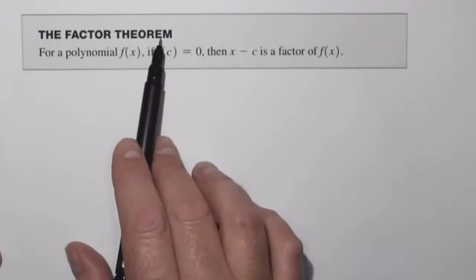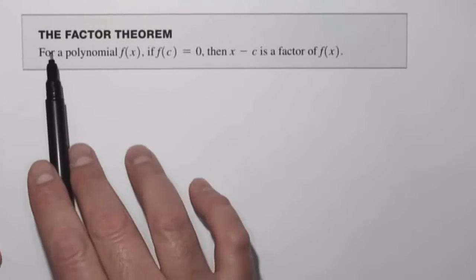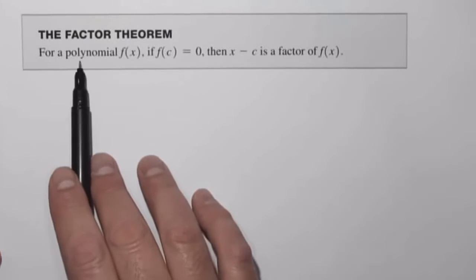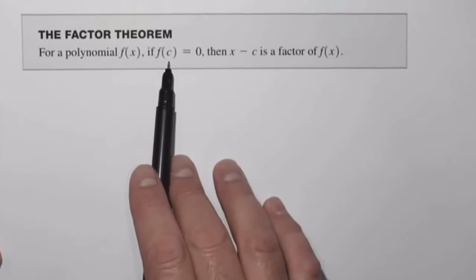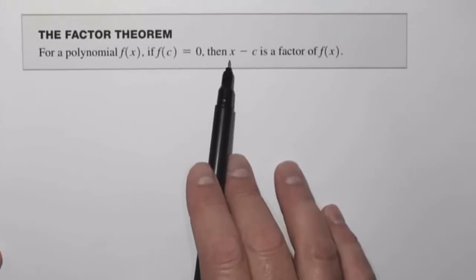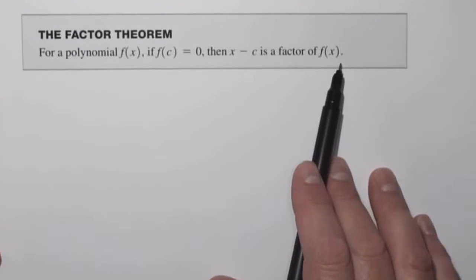In this video, we're going to examine the Factor Theorem. Now the Factor Theorem states that for a polynomial f of x, if f of c equals 0, then x minus c is a factor of f of x.